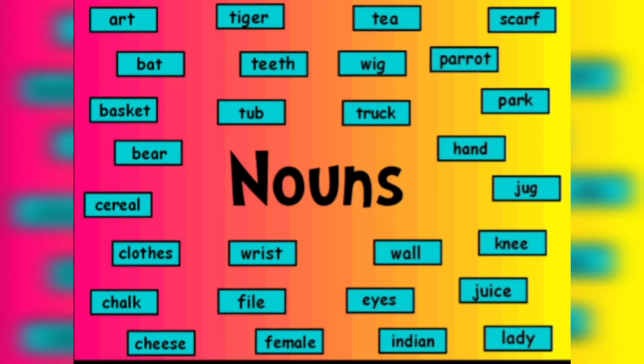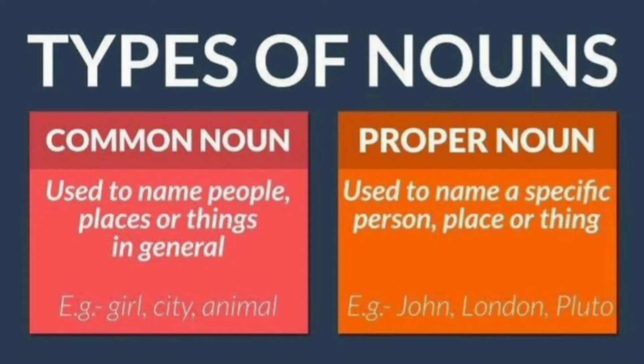The first two categories of nouns are proper noun and common noun. Common nouns are the name given to people, places or things in general. For example, girl, city and animal are common nouns. These are the general name of a person, place, animal or a thing.